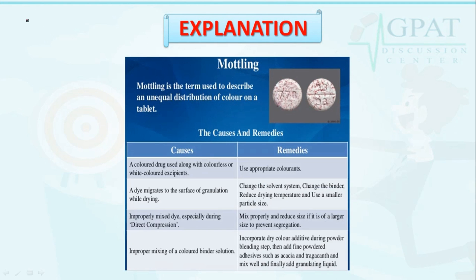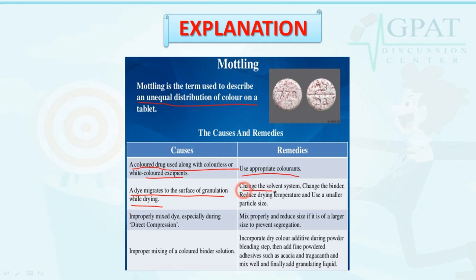Mottling is the term used to describe unequal distribution of color on a tablet. The main causes of mottling are: a colored drug used along with colorless or white-colored excipients — its remedy is to use appropriate colorants; a dye migrates to the surface of granulation while drying — its remedy is to change the solvent system, change the binder, reduce drying temperature, and use a smaller particle size; improperly mixed dye especially during direct compression — its remedy is to mix properly and reduce size if larger, to prevent segregation.